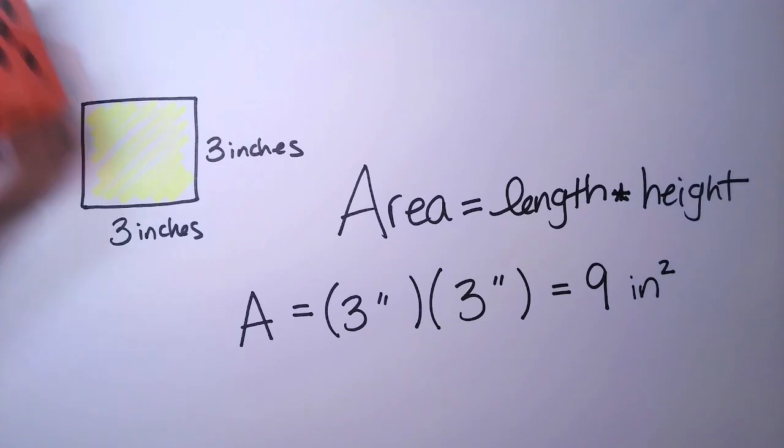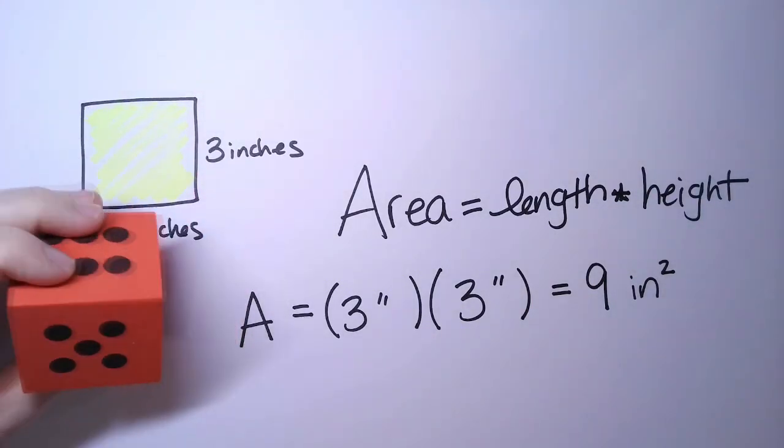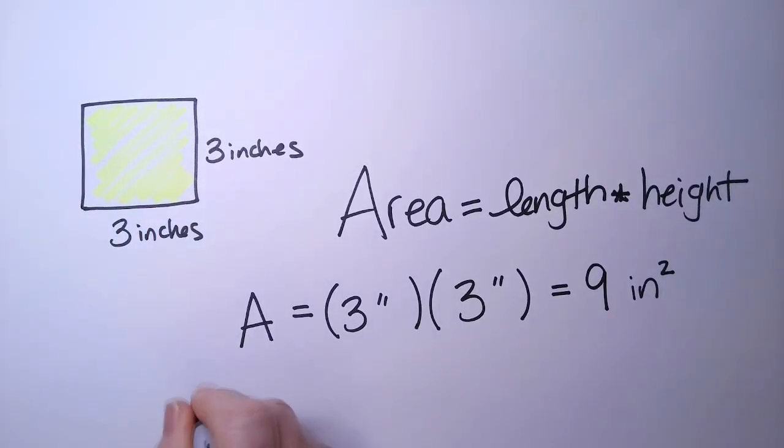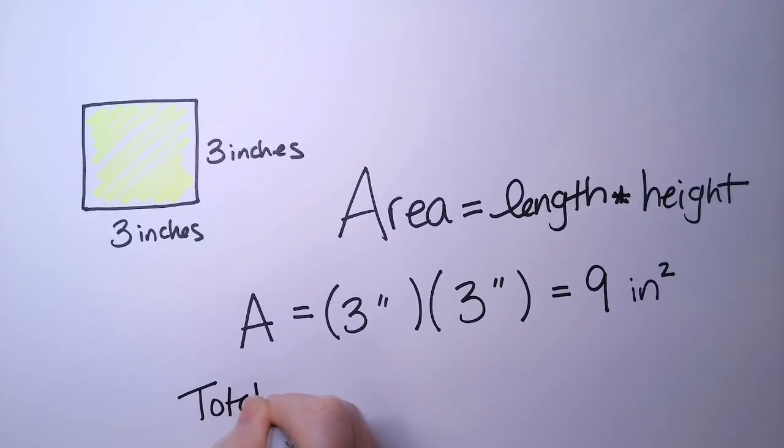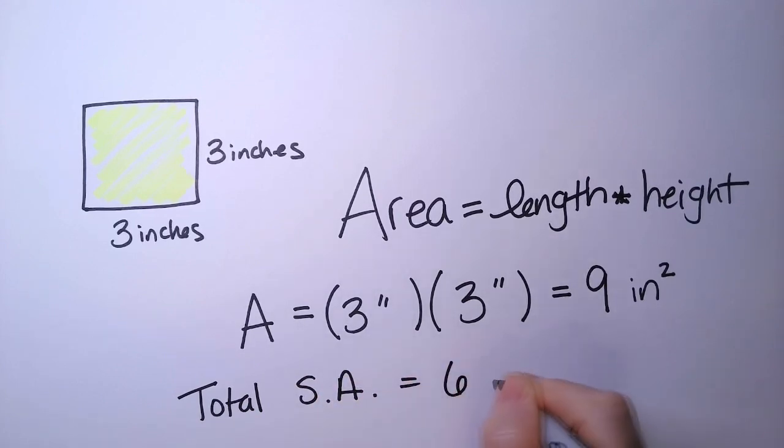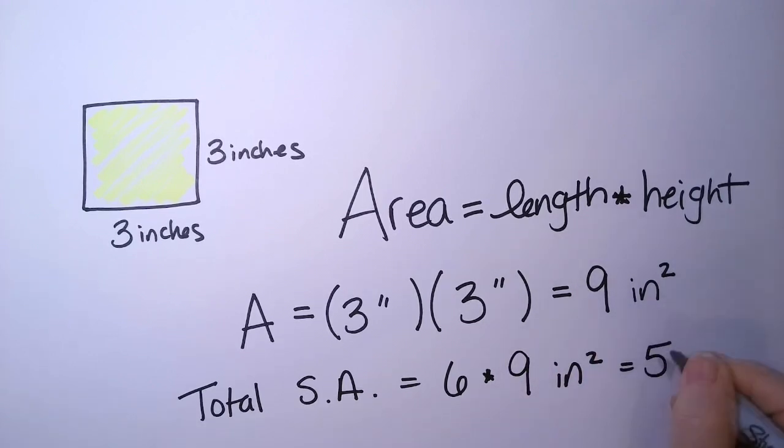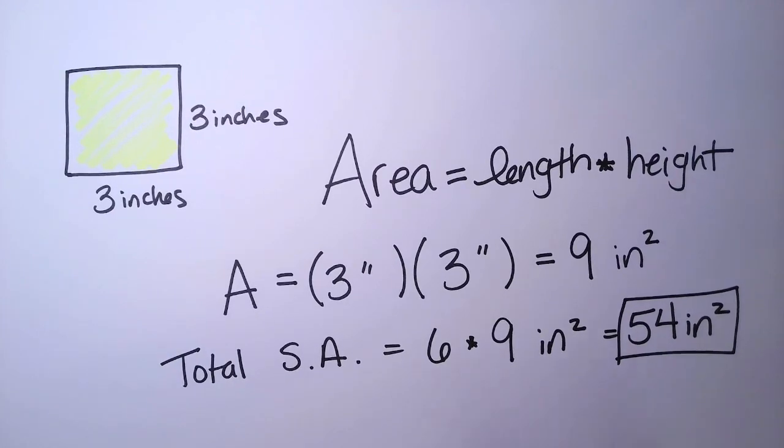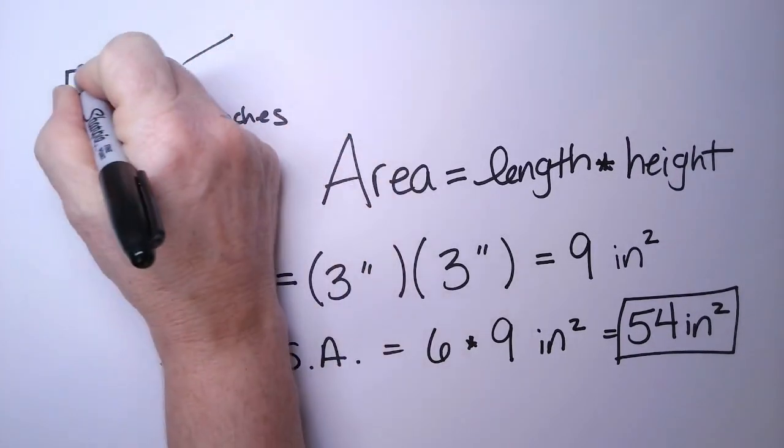So that's the area of one of the sides. Since a cube has six sides, I would take this area of one of the faces and simply multiply it by six. So total SA, stands for surface area, is six times the area of one of the faces, which for us is nine inches squared. Six times nine is 54 square inches. And that is the surface area of a cube that is three inches on a side.